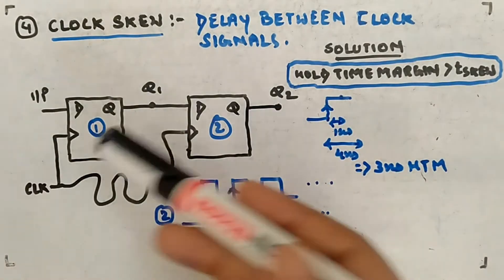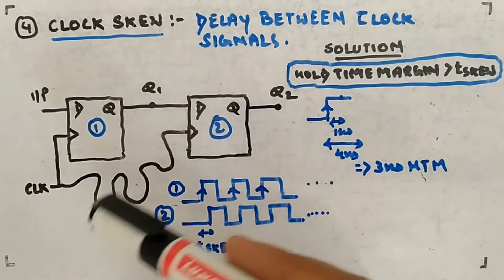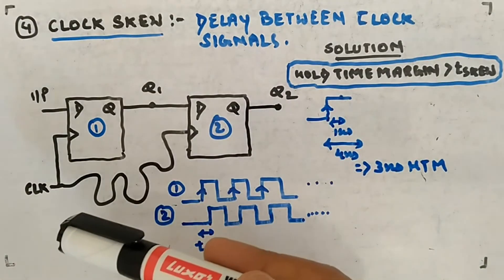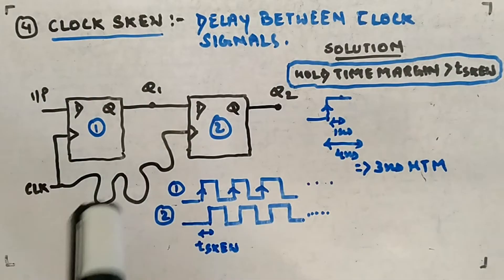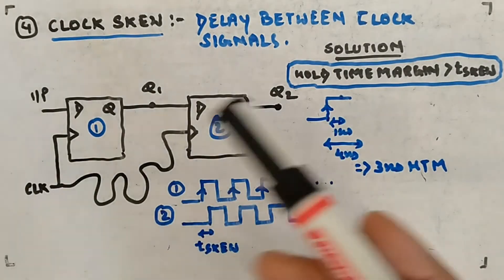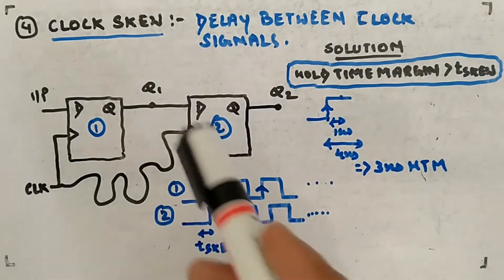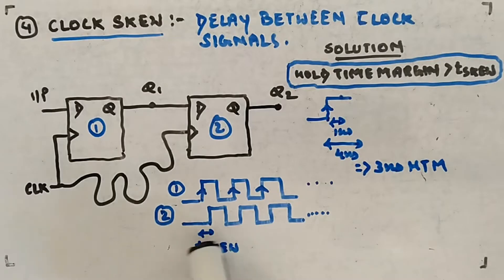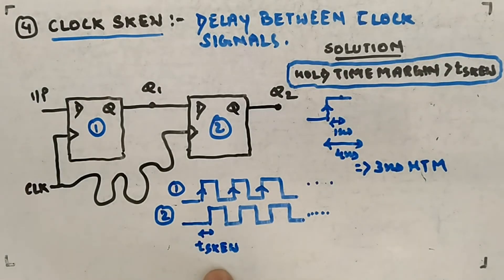It doesn't mean only two flip-flops are there — there could be more, and you want all of them to receive the clock at the same time. But due to some practical reasons, some of them are getting a delayed clock. That's when clock skew occurs — the delay between clock signals.